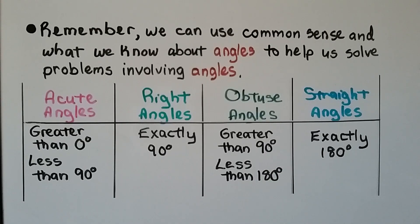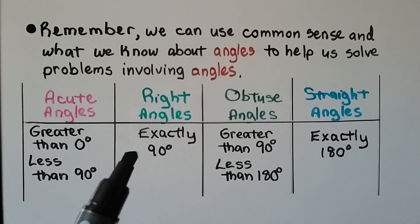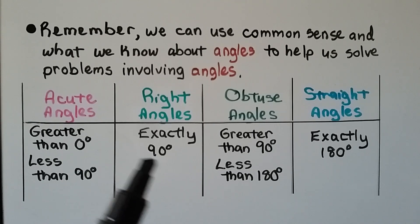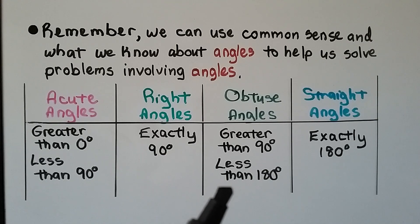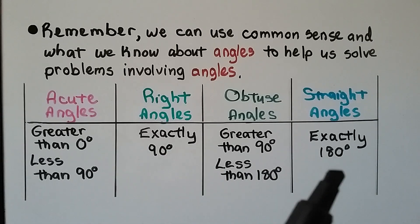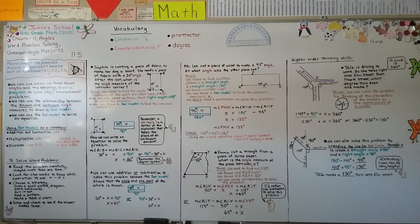Remember, we can use common sense and what we know about angles to help us solve problems. Acute angles are greater than zero degrees but less than 90 degrees. Right angles are exactly 90 degrees. Obtuse angles are greater than 90 degrees and less than 180 degrees. Straight angles are exactly 180 degrees. Remember to use the degree symbol, check your work with an inverse operation, and extend lines if you need them. We're finished with chapter 11 and moving on to chapter 12, which covers measurement units like millimeters, gallons, and quarts.